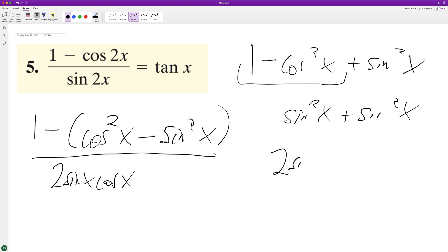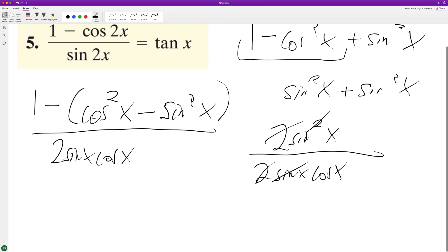This becomes two sine squared x over two sine x cosine x. One sine x cancels out, and the twos cancel. We're left with sine x over cosine x, which equals tangent x.